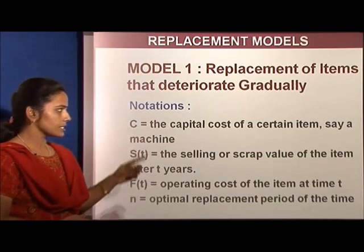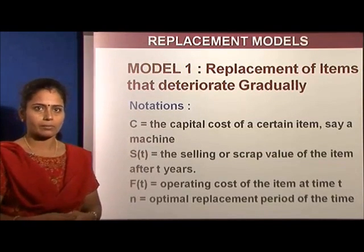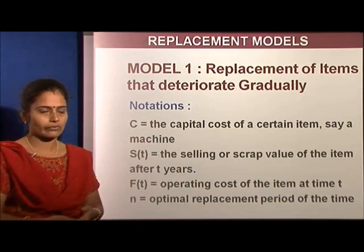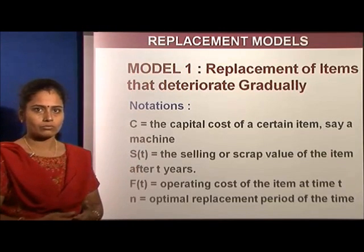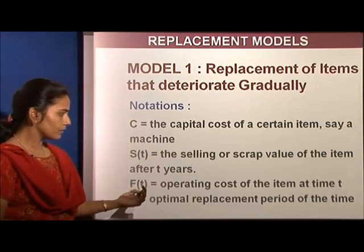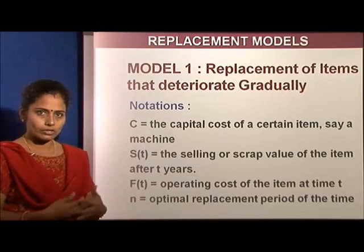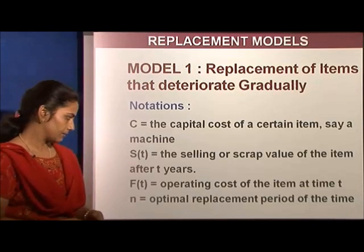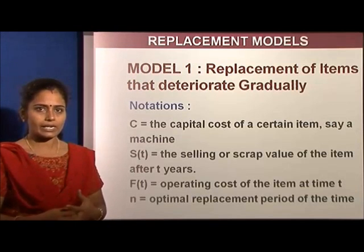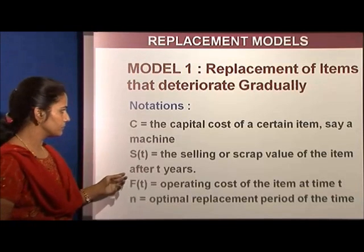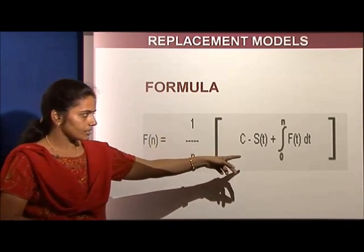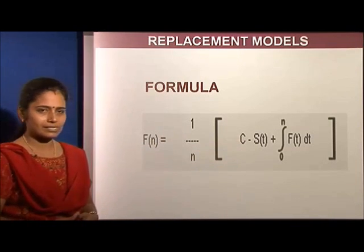Let us understand the notations one by one. C is the capital cost of a certain item — for example, the cost to purchase a laptop or machinery for the organization. S(t) is the scrap value — what value can I get if I sell it today. f(t) is the operating cost for the product at time interval t. N is the optimal replacement period. The formula is: (1/N) × [C − S(t) + ∫₀ᴺ f(t) dt].